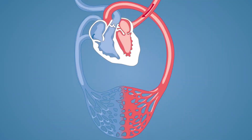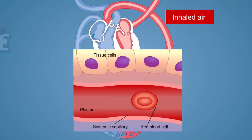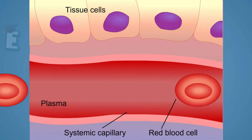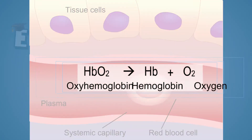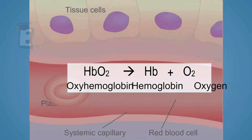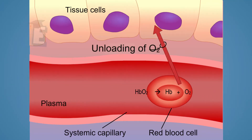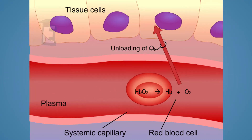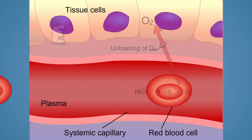Soon after it is bound by hemoglobin, the bloodstream carries the oxygen to all the body tissues. The oxygen pressure reduces as the blood travels further from the lungs, because during its trip, the blood diffuses the oxygen to the body tissues.